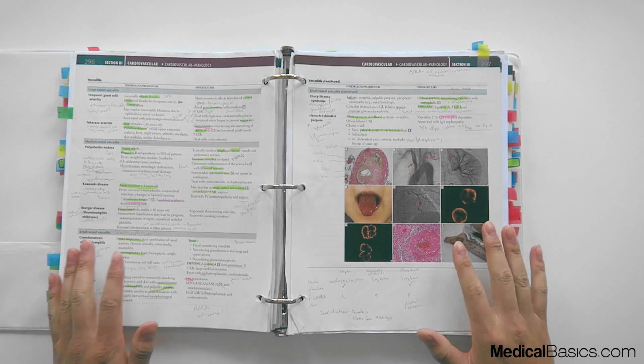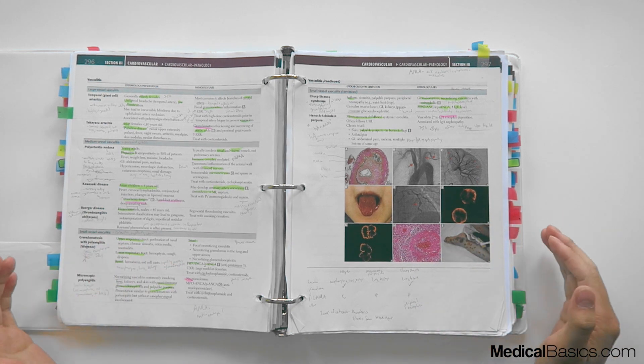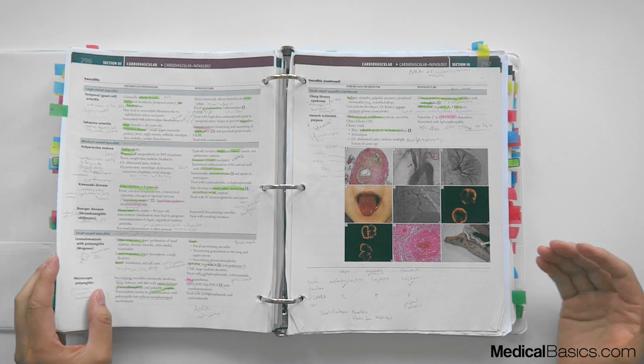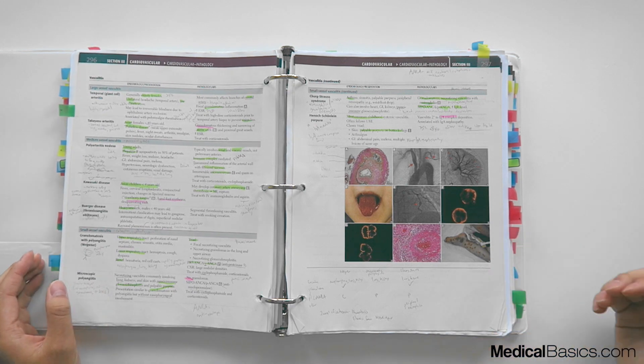So things like vasculitis, a lot of the biochem section, a lot of the antibiotics section—you'll see have most of the greens. Then they would be upgraded.